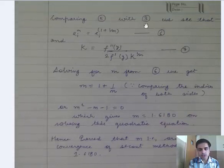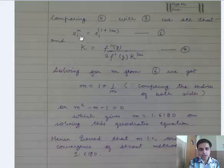Comparing equation number 3, we see that ei to the power m equals ei to the power 1 plus 1/m. It is equation number 6, and k equals f''(y) upon 2f'(y) times k to the power 1/m. This is our equation number 7.